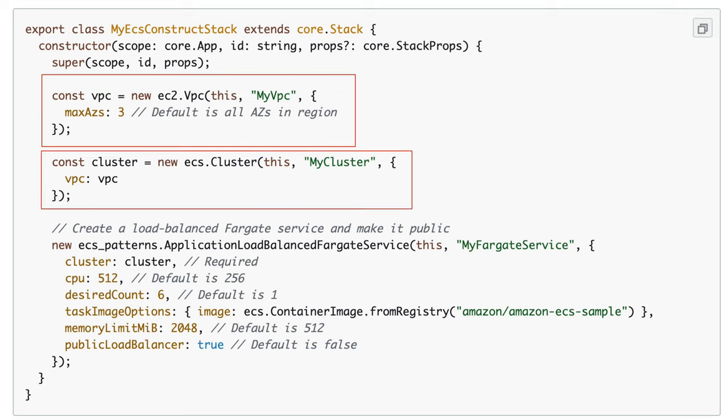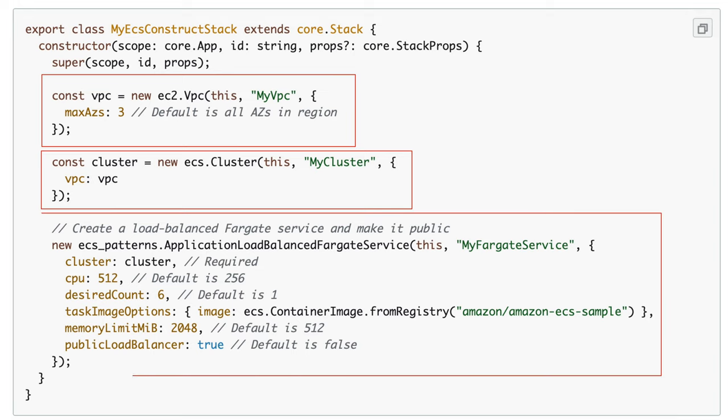This creates an ECS cluster where you can run Docker images, and this creates an application from a Docker image from the Amazon ECS sample. It runs your Docker image in Fargate and creates a load balancer in front of it.